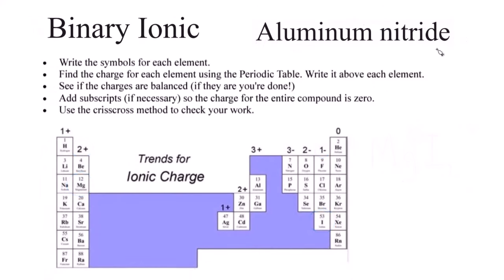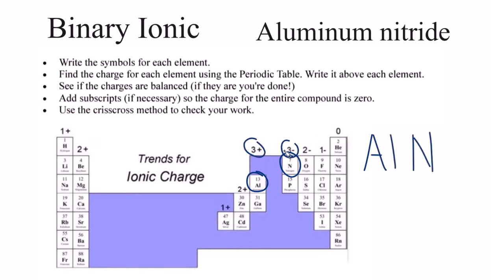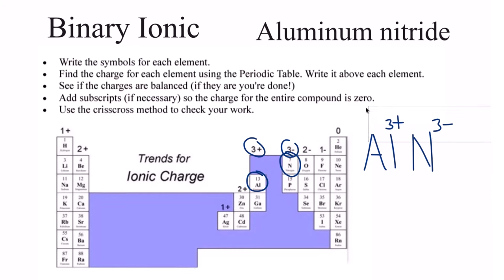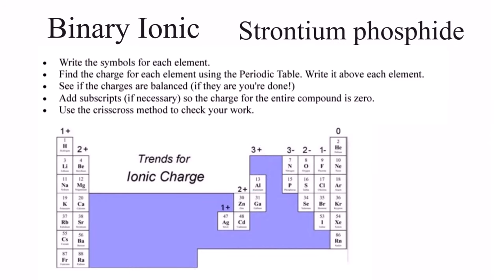Here's a slightly more difficult one — give aluminum nitride a try. Aluminum is a metal and nitrogen is a nonmetal, so it's ionic. Write the element symbols, write in the charges. In this case they're the same magnitude, so we're done — aluminum nitride is just AlN.